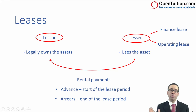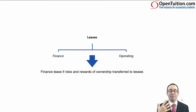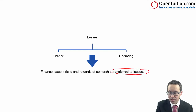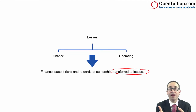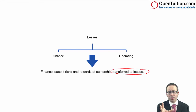Before we start talking about things from the lessor's perspective, let's think about when we have a finance lease. We have a finance lease if the risks and rewards are transferred to the lessee. So if the person who uses the asset has the risks and rewards of ownership, then it's a finance lease. If the lessee does not have the risks and rewards of ownership, then quite simply it's not a finance lease — so it must be an operating lease. To make the judgment, we look at it from the lessee's perspective and determine whether they have the risks and rewards of ownership.